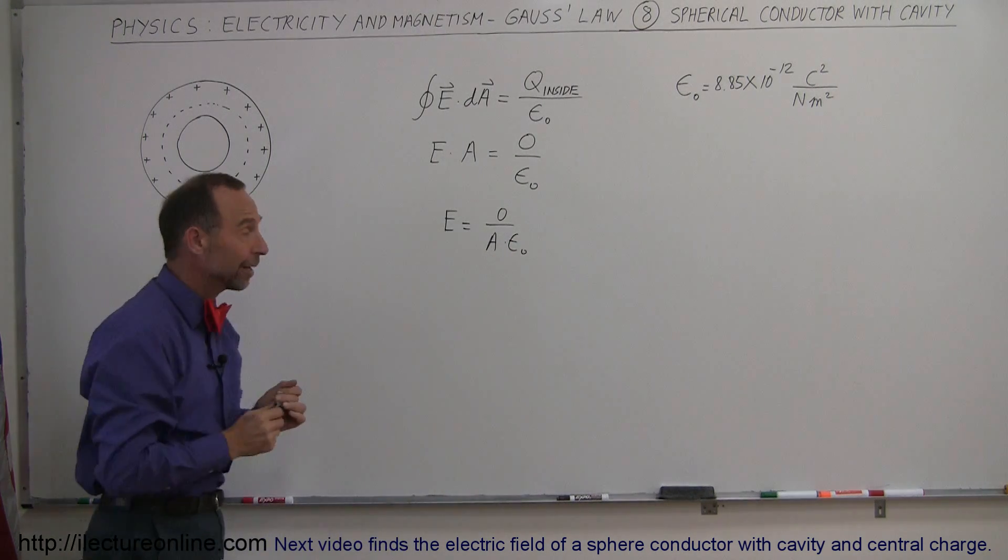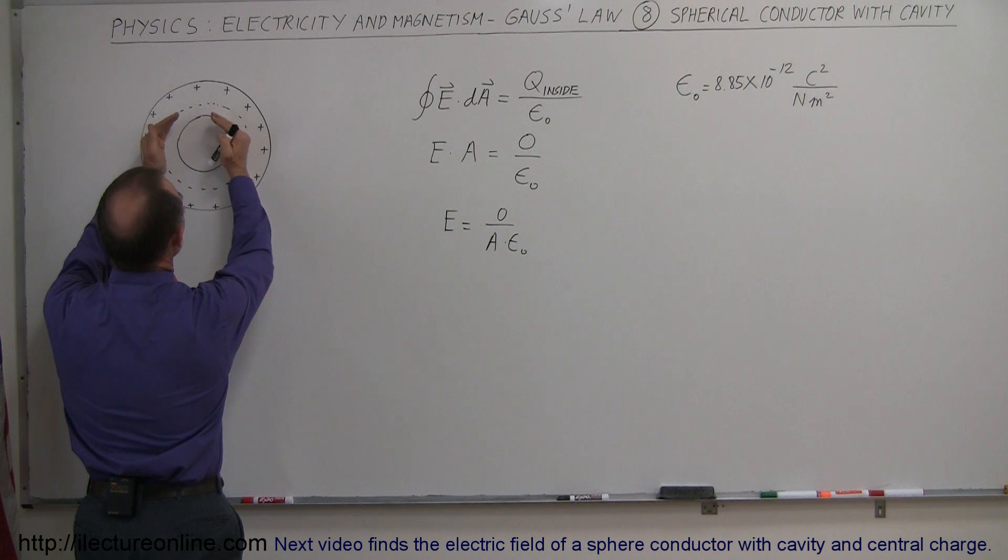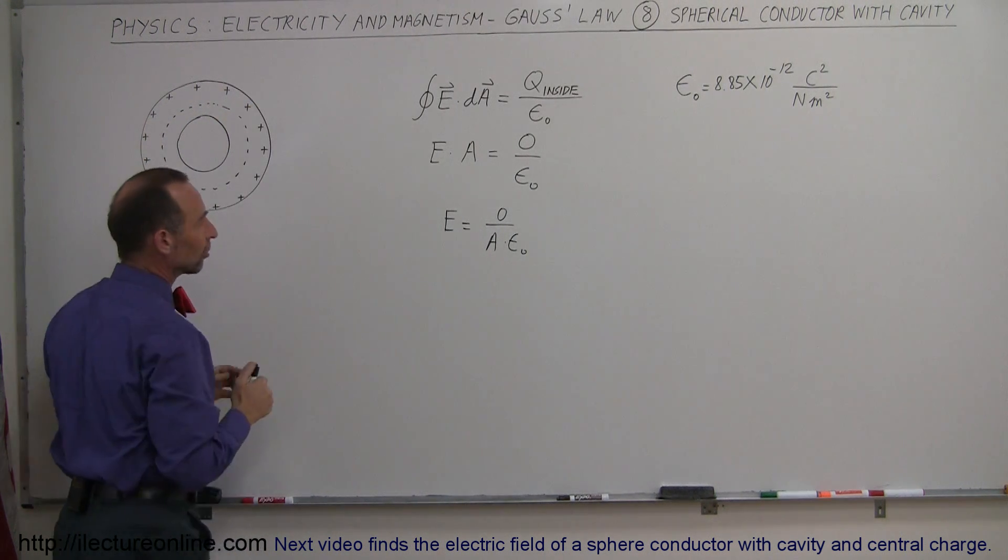It doesn't matter how big the area of the Gaussian surface is. It could be inside the cavity, it can be including the cavity, all the way out to the edge of the conductor here.